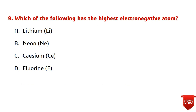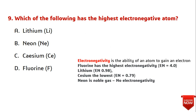Question nine: which of the following has the highest electronegative atom? Electronegativity is the ability of an atom to gain an electron. In the periodic table, the highest electronegativity is observed for fluorine — 4.0. The lowest is cesium at 0.79. Lithium has an electronegativity of 0.98, and neon is a noble gas with no measurable electronegativity. So the answer is fluorine.